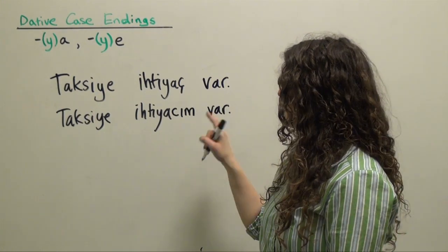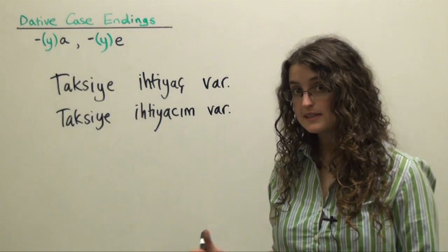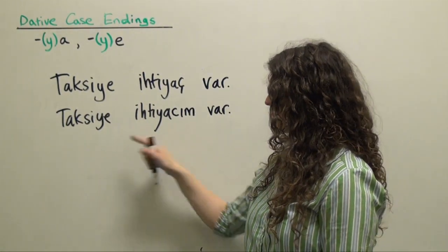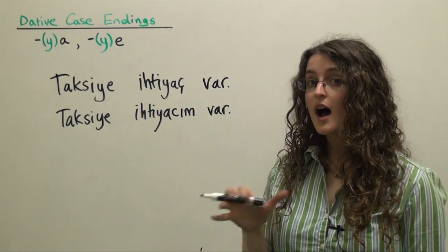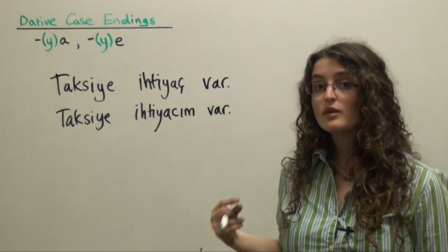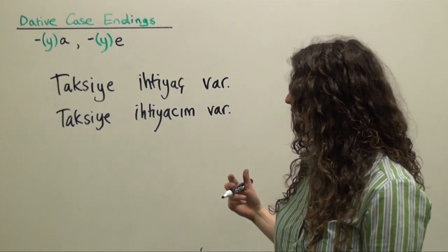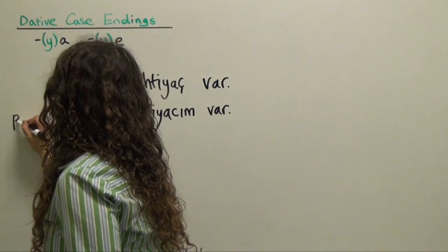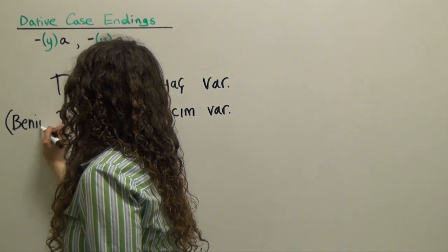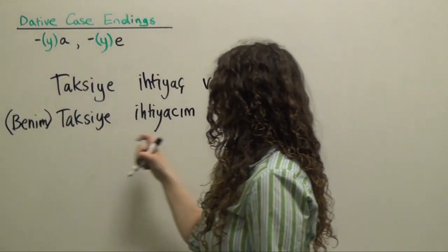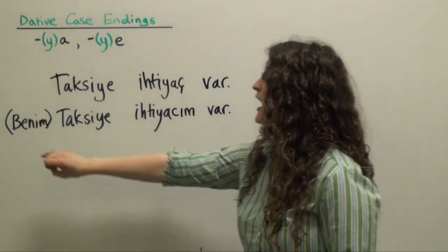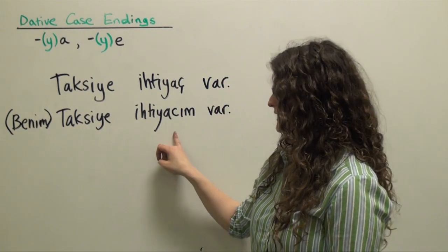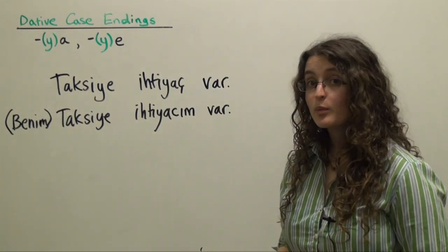'Taksiye ihtiyaç' — because we're adding to the end of the noun 'ihtiyaç' a possessive suffix that begins with a vowel, we're going to see that the 'ç' undergoes consonant alternation and becomes a 'c.' So: 'ihtiyacım' — my need — 'var.' Literally, 'my need for a taxi exists,' but we'll translate and understand it as 'I need a taxi.' If you want to emphasize 'I need a taxi,' you have the option of adding the personal pronoun 'I' in the genitive: 'Benim taksiye ihtiyacım var.'